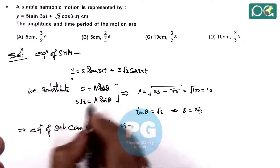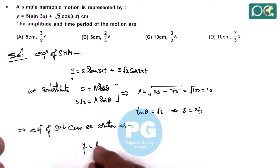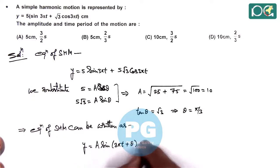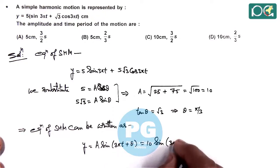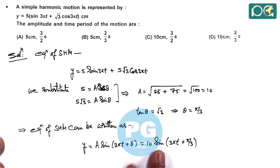Here y we can write, if we write 5 as a cos theta and 5√3 as a sine theta, this will be A sine of 3π t plus π/3. This is the general equation in which we have converted it.